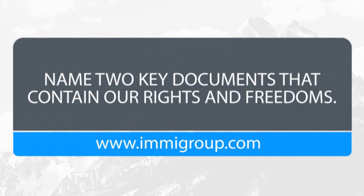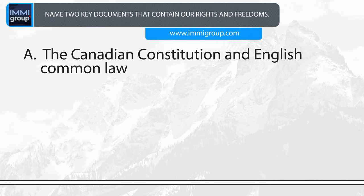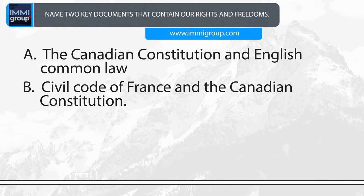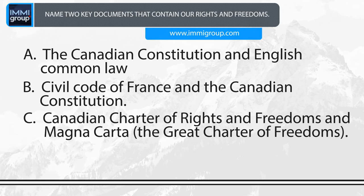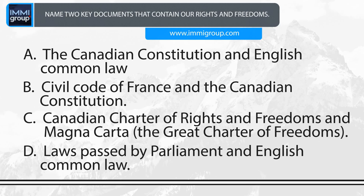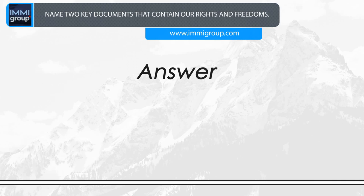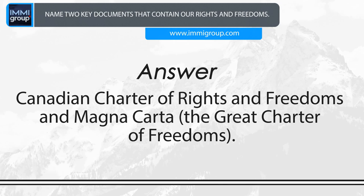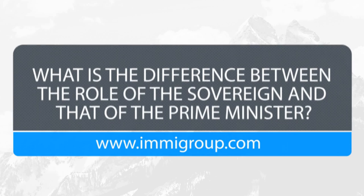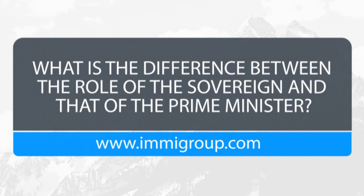Name two key documents that contain our rights and freedoms. A. The Canadian Constitution and English common law. B. Civil code of France and the Canadian Constitution. C. Canadian Charter of Rights and Freedoms and Magna Carta, the Great Charter of Freedoms. D. Laws passed by Parliament and English common law. Answer: Canadian Charter of Rights and Freedoms and Magna Carta, the Great Charter of Freedoms.